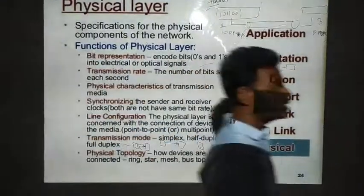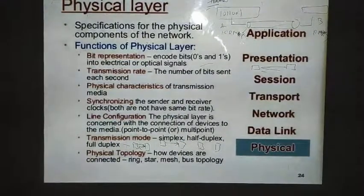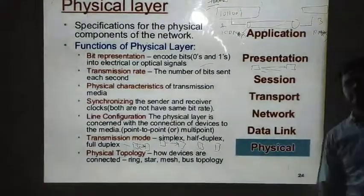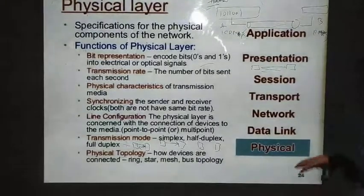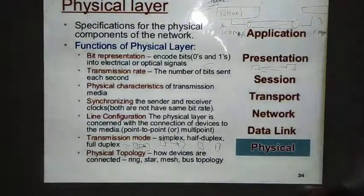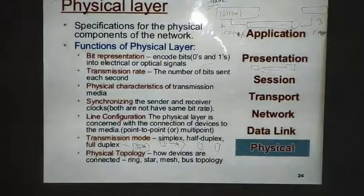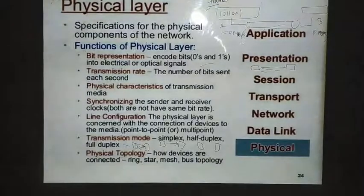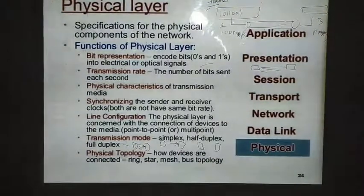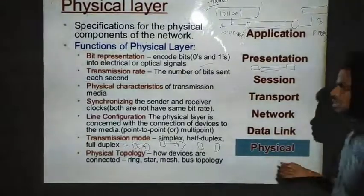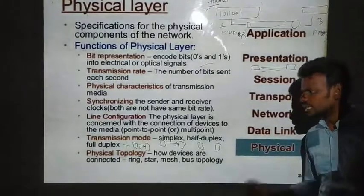Physical topology refers to how we logically connect systems. The physical layer determines which topology is suitable for a particular kind of communication. The topologies we have discussed include bus topology, mesh topology, star topology, ring topology, hybrid topology, and tree topology. Please review those previous sessions to reinforce your understanding of physical topology.